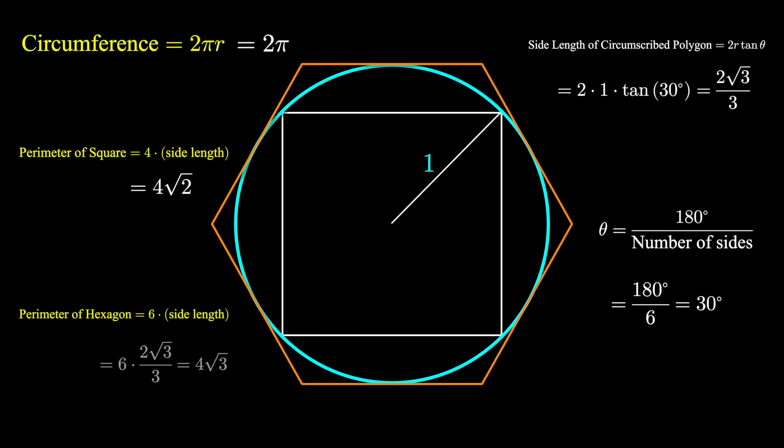We have 6 sides, and so the perimeter of this hexagon is 6 times 2 root 3 over 3, or 4 root 3.